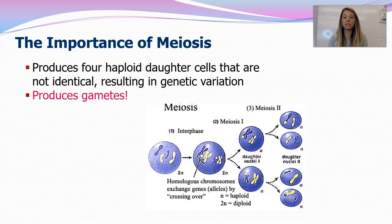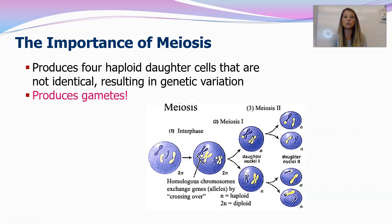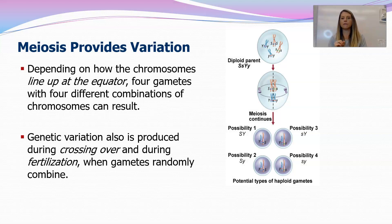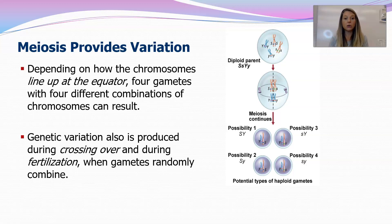Let's talk about the importance of meiosis. One big thing is that we produce four haploid daughter cells that are not identical to each other — they result in genetic variation. Meiosis produces genetically varied gametes, and genetic variation leads to a stronger species. Where does that genetic variation come from? It can come from crossing over, which we've already discussed. Genetic variation also depends on which egg gets fertilized by which sperm, and on how the chromosomes line up and separate — different combinations of chromosomes result in different final daughter cells.